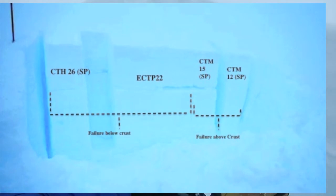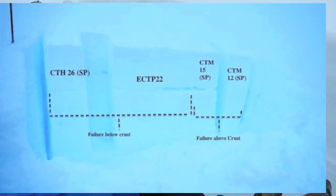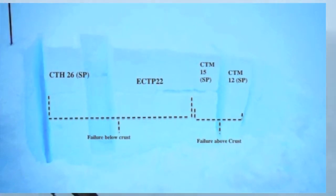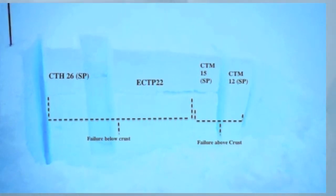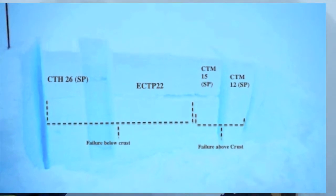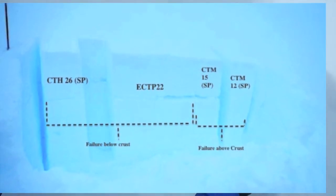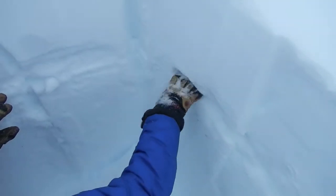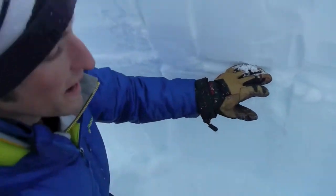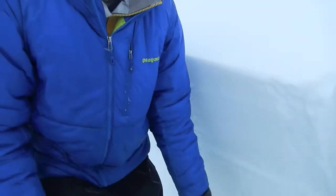As we move across the pit, we're actually getting easier to moderate results. And then over here, the crust is actually thicker and there's a layer of facets above — kind of forefinger hardness — and we are getting moderate results on top of the crust here. That really just speaks to the complex nature of this problem.